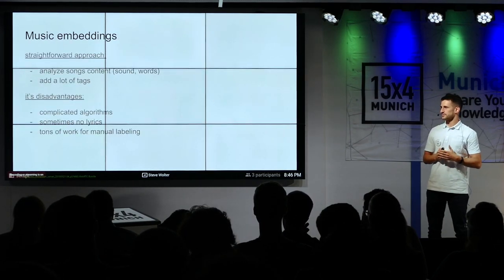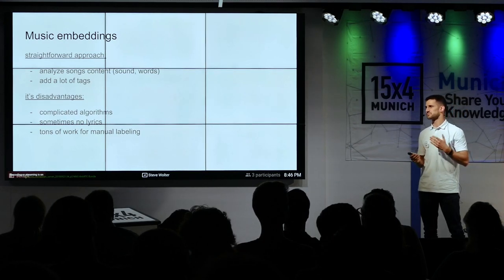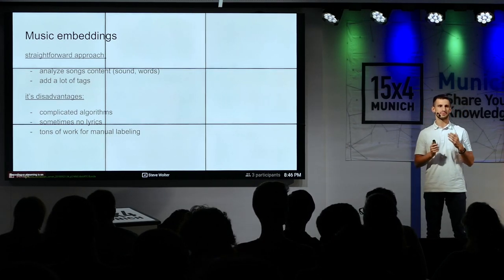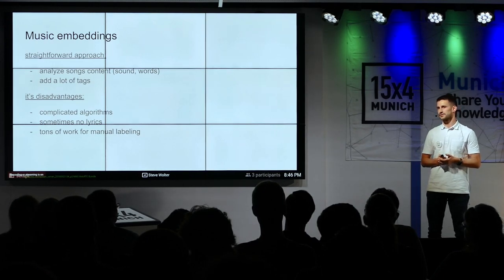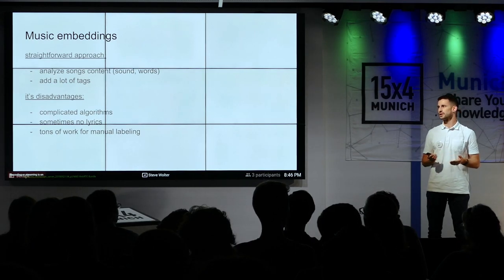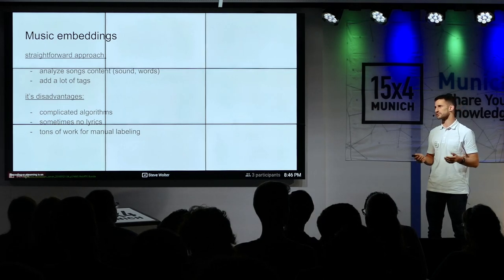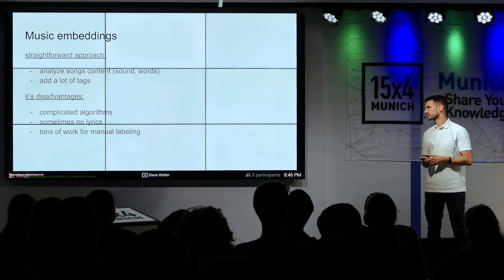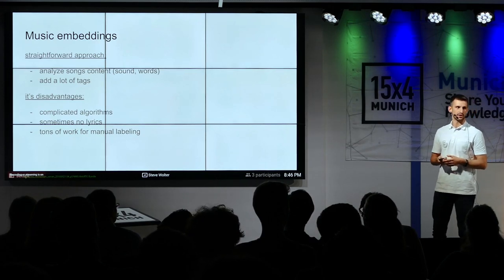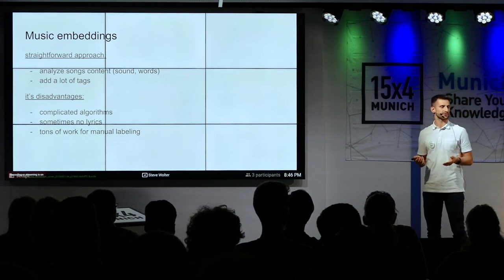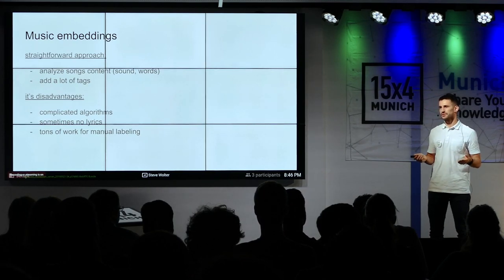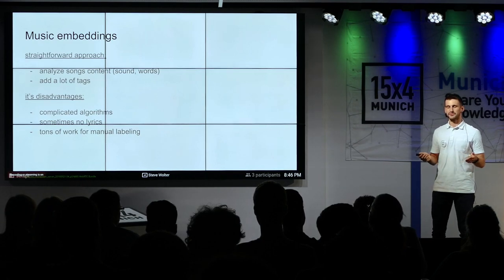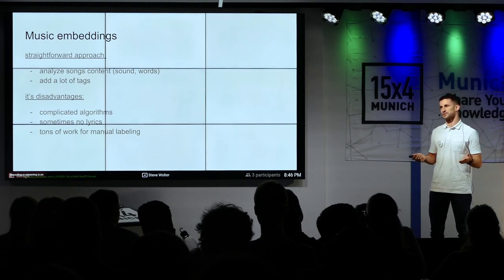How can we do embeddings for music? The simplest idea to convert music into something digital: you can look at the content of the song, analyze the sound spectrum, look at the lyrics, or try to label everything with different genres. But there are obvious disadvantages — the algorithms for sound processing are quite complex, sometimes you listen to instrumental music with no lyrics at all, and if you want to label everything it would be a bunch of manual labor, which is not fun.